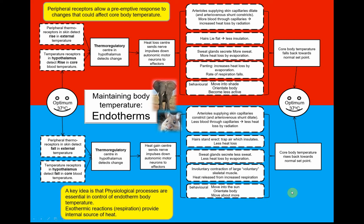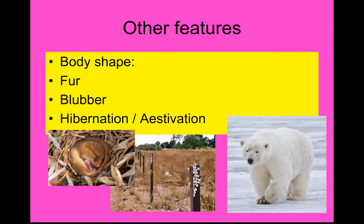Other things you can do: curl up into a ball to reduce your surface area to volume ratio as much as possible. Pause the video here if you want to add any notes. Also have a think about: how does body shape matter? How do fur, blubber, hibernation, and estivation help? Have you heard of those? Do you know what they do?